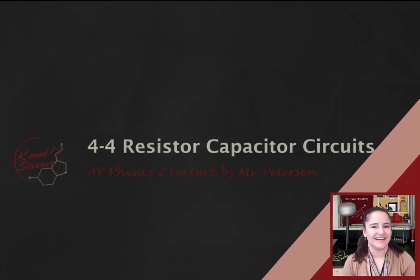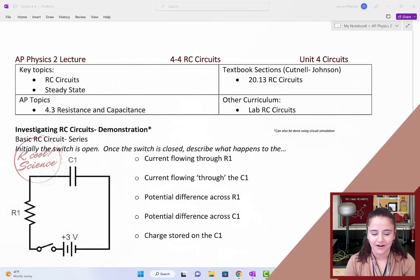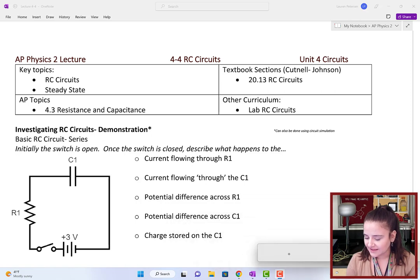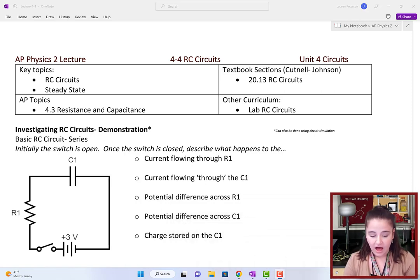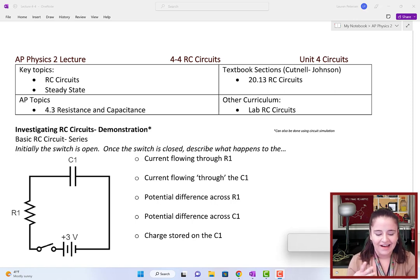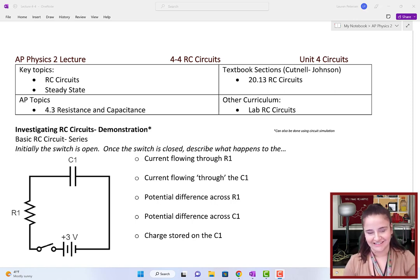Hi guys, Ms. Peterson here and welcome to AP Physics 2 lecture 4-4, all about RC circuits. In this lecture we're going to be talking about what an RC circuit is and how RC circuits — or resistor-capacitor circuits, not remote control — work as they start charging, the capacitor becomes fully charged, and reaches what we call steady state.